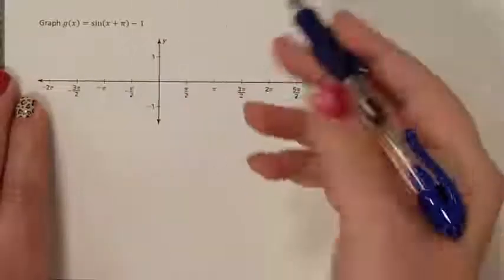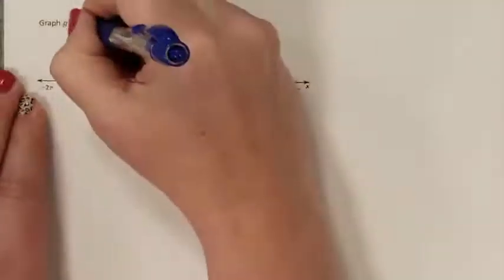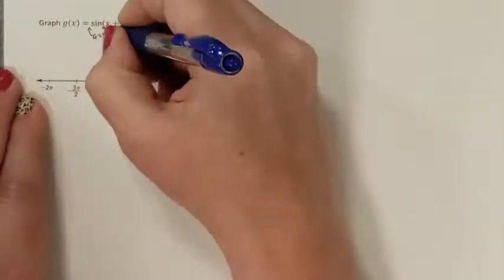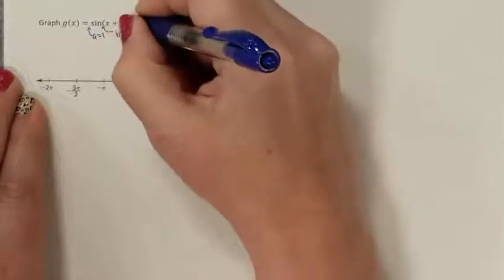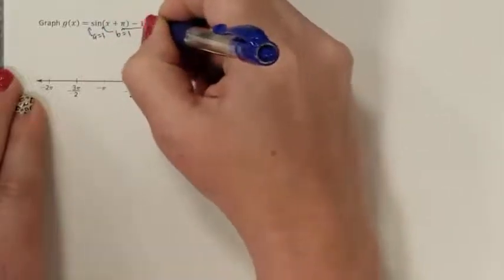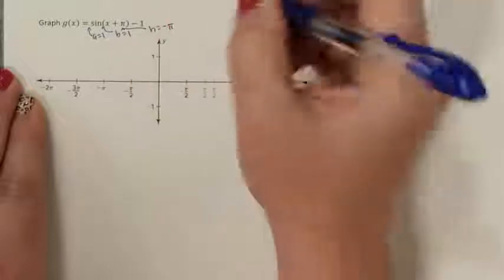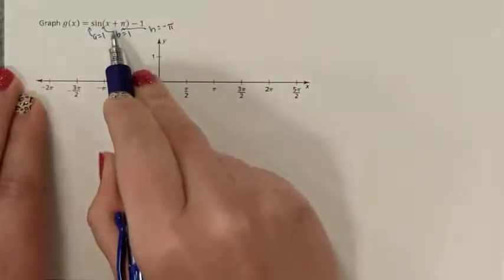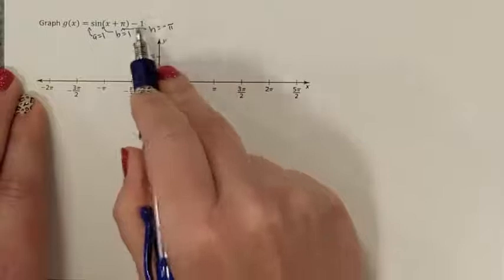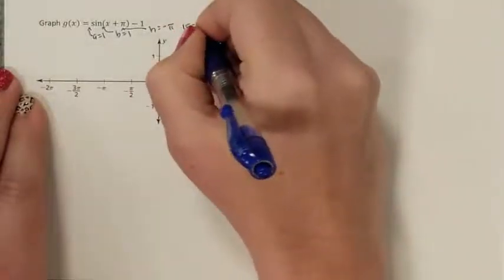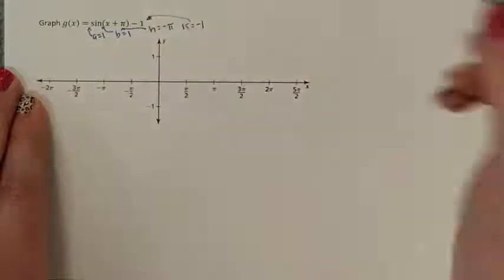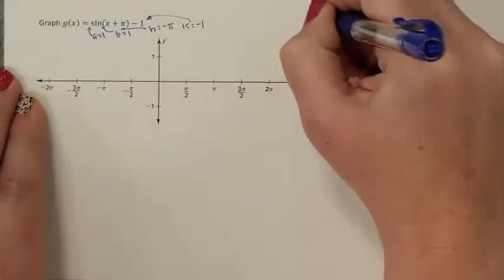Now we're graphing the next problem. First, identify your a, which is 1, and b, which is also 1. Our h is inside — your h is negative pi, because the rule requires subtraction, so you had to be subtracting a negative pi. And my k, which is on the outside, is negative 1.